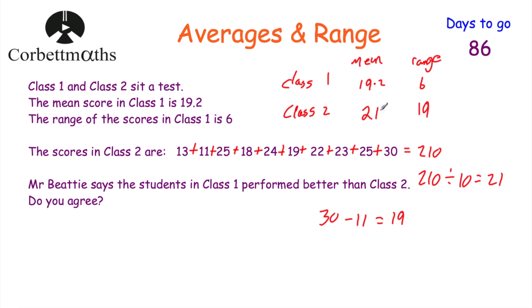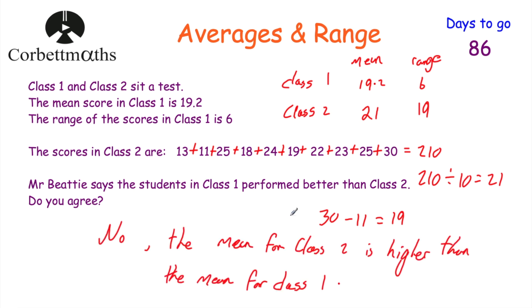Looking at the table: class two's average is higher than class one's. He said the students in class one perform better than in class two, but I don't agree — the mean is actually higher in class two than in class one. The range in class two is much higher than in class one, meaning results are more spread out — perhaps some students did worse and some did very well, making them less consistent. But the mean for class two is higher than for class one, so no, I don't agree with Mr. Beatty.